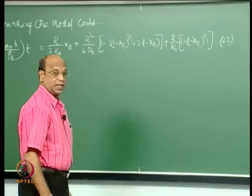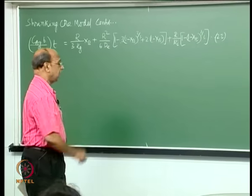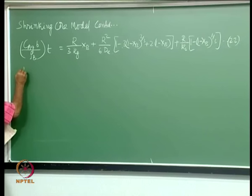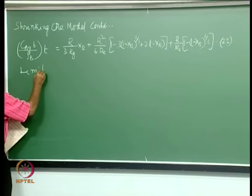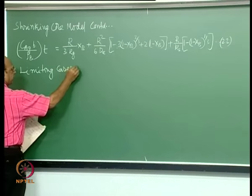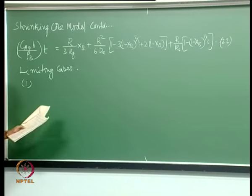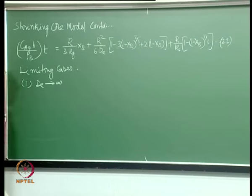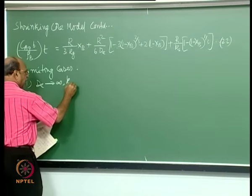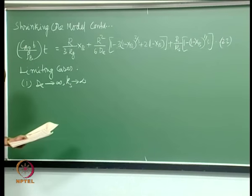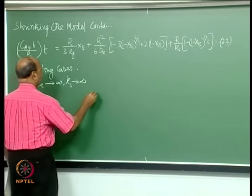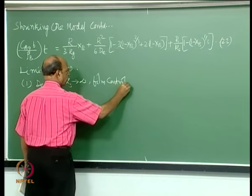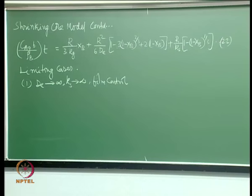This equation was derived yesterday and now we will discuss the limiting cases of it. The first case is when effective diffusivity is very large or K_s is also very large, then we have film control — film mass transfer is the rate controlling step.